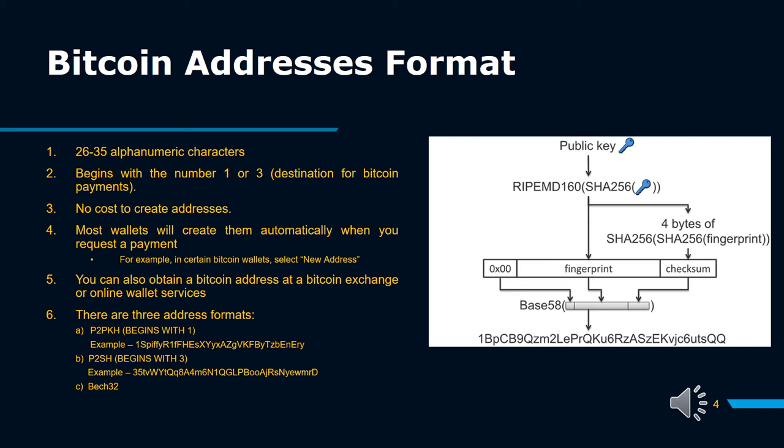C: Bech32, the Bech32 SegWit Address. Bech32 is a new Bitcoin address and is the most advanced one compared to the other two. It starts with BC1 and is longer than P2PKH and P2SH. Bech32 is a SegWit address and supports multiple wallets and several other addresses, and is the most popular address used today. Transactions with Bech32 are faster, fees are lower, and it also reduces the chance of human error.